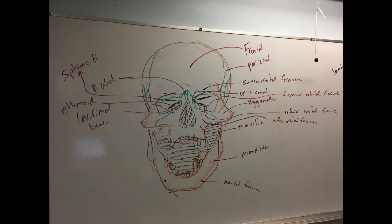We'll just start with the big ones. Your whole lower jaw — mandible. The mental region is your chin, but the whole lower jaw is your mandible.